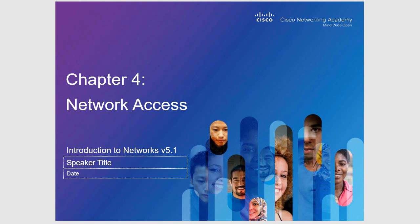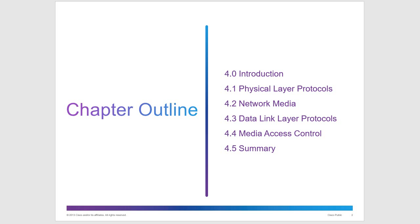This is going to be CCNA1 Chapter 4: Network Access Layer. The Network Access Layer refers to the TCP/IP model. If you're looking to line that up with the OSI model, it covers the physical and the data link layers. We'll be discussing network media, data link layer protocols, and media access control.